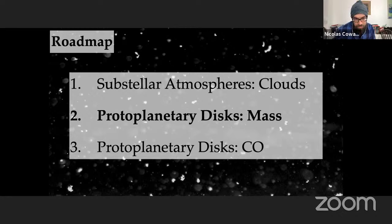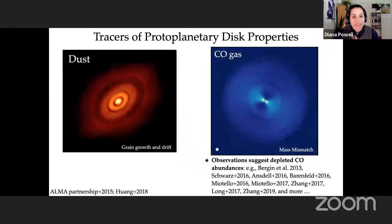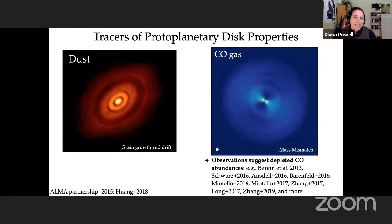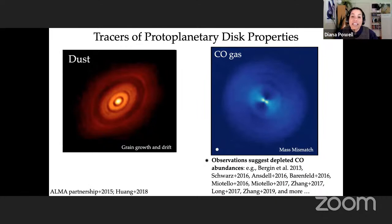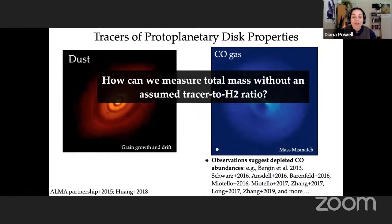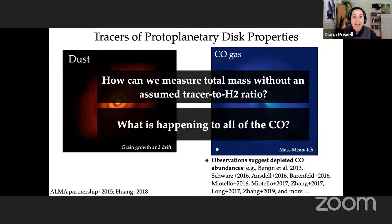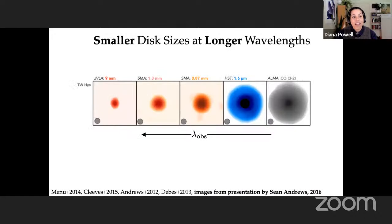The most common tracers of protoplanetary disc properties are dust or trace gases such as CO gas, because these are relatively easy to observe. Due to a lack of direct probes of the main mass constituent, H₂ gas, previous measures of disc mass have relied on some tracer-to-H₂ ratio — either dust-to-gas or CO-to-H₂. We know that grain growth and drift should alter the dust-to-gas ratio from the typically assumed interstellar medium value, and several lines of evidence suggest that CO in the commonly observed upper disc layers is depleted in discs. This begs the question: how can we measure the total mass without an assumed tracer-to-H₂ ratio, and what is happening to all of the CO?